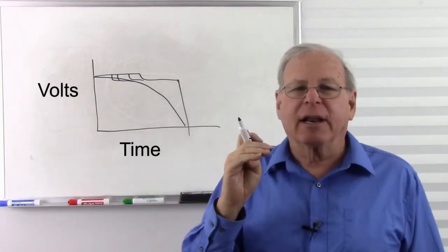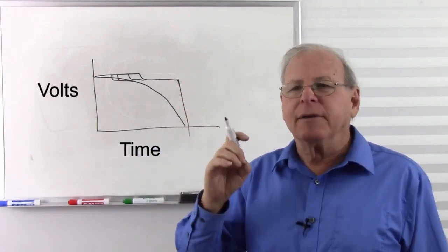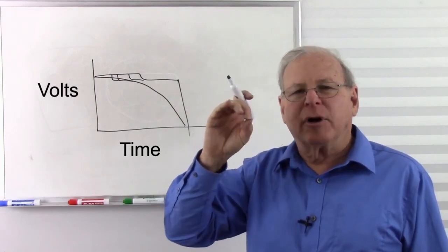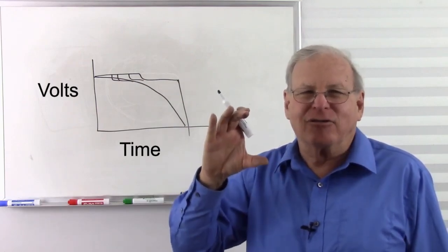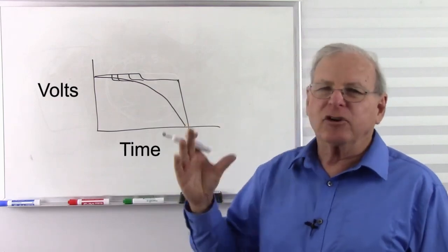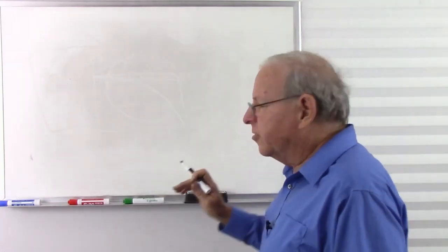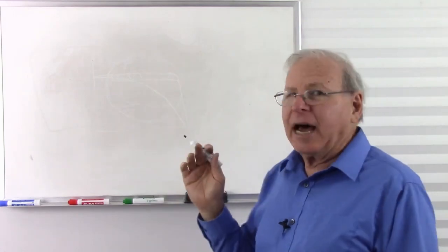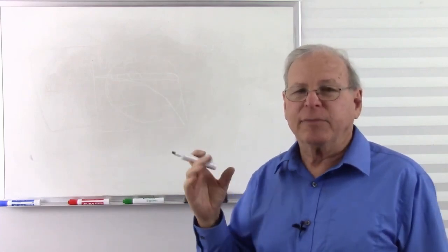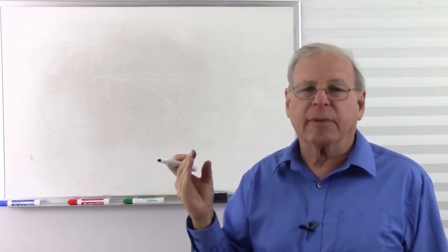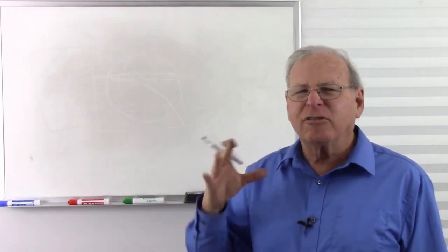Nickel cadmium batteries need to be periodically reconditioned by completely discharging them. The General Electric book recommended discharging them with a light bulb for 24 hours and then shorting them together for another 24 hours — basically completely discharge it and then recharge it. That would recondition the battery. Nickel metal hydrides have a higher capacity and less memory effect, and they're basically a direct replacement. Your charger that worked with nickel cadmium will also work with nickel metal hydrides.